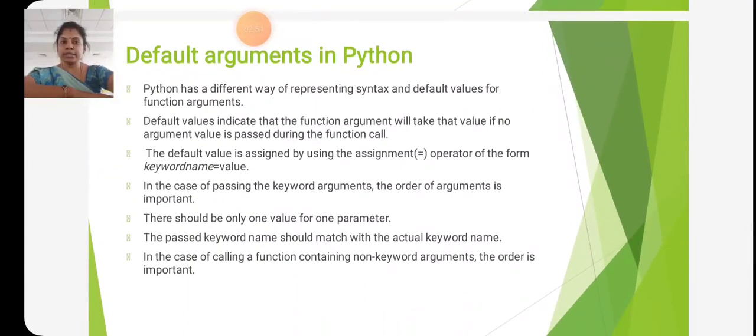Then default arguments in Python. Python has a different way of representing syntax and default values for function arguments. Default values indicate that the function argument will take that value if no argument value is passed during the function call. The default value is assigned by using the assignment operator of the form keyword name equal to value.